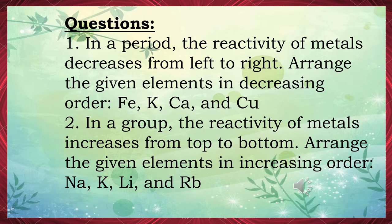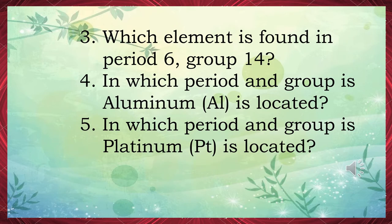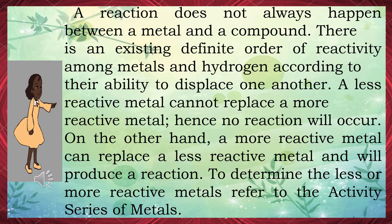Number 2: In a group, the reactivity of metals increases from top to bottom. Arrange Na, K, Li, and Rb in increasing order. The correct answer is rubidium (Rb), potassium (K), sodium (Na). Number 3: Which element is found in period 6, group 14? The answer is lead (Pb). Number 4: In which period and group is aluminum (Al) located? The answer is period 3, group 13. Number 5: In which period and group is platinum (Pt) located? The answer is period 6, group 10.